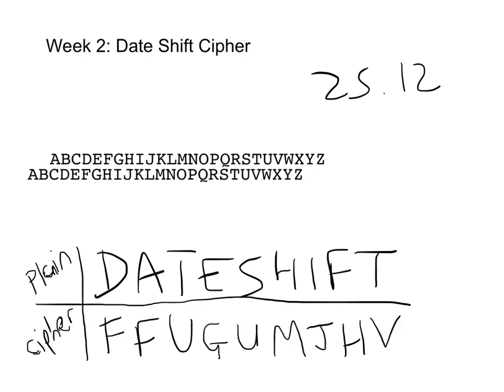There you see our final encoded message: F F U G U M J H V. I can leave it as is, or group it in threes or twos however I'd normally do it. The way to decode it is the same as encoding, only in reverse — and we'd need to all agree on which birthday was the important date.